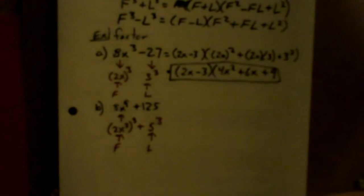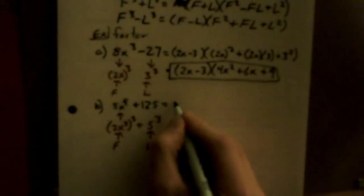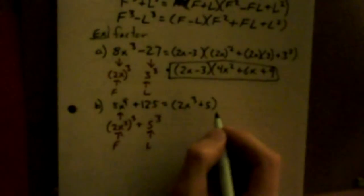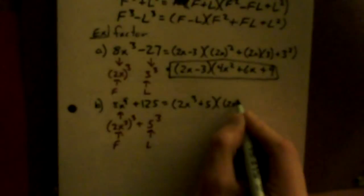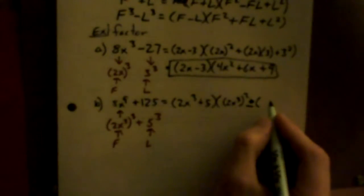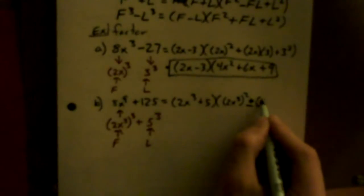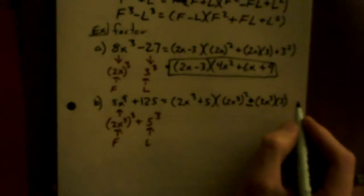This is F + L, which is 2x³ + 5, times F², which is (2x³)², minus F times L, 2x³ times 5, plus L².